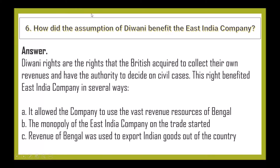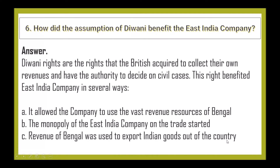Next question: How did the assumption of Diwani benefit the East India Company? Diwani rights are the rights that the British acquired to collect their own revenues and have the authority to decide on civil cases. This benefited the East India Company in several ways: it allowed the company to use the vast revenue resources of Bengal; the company's monopoly on trade was strengthened; and the revenue of Bengal was used to export Indian goods out of the country.